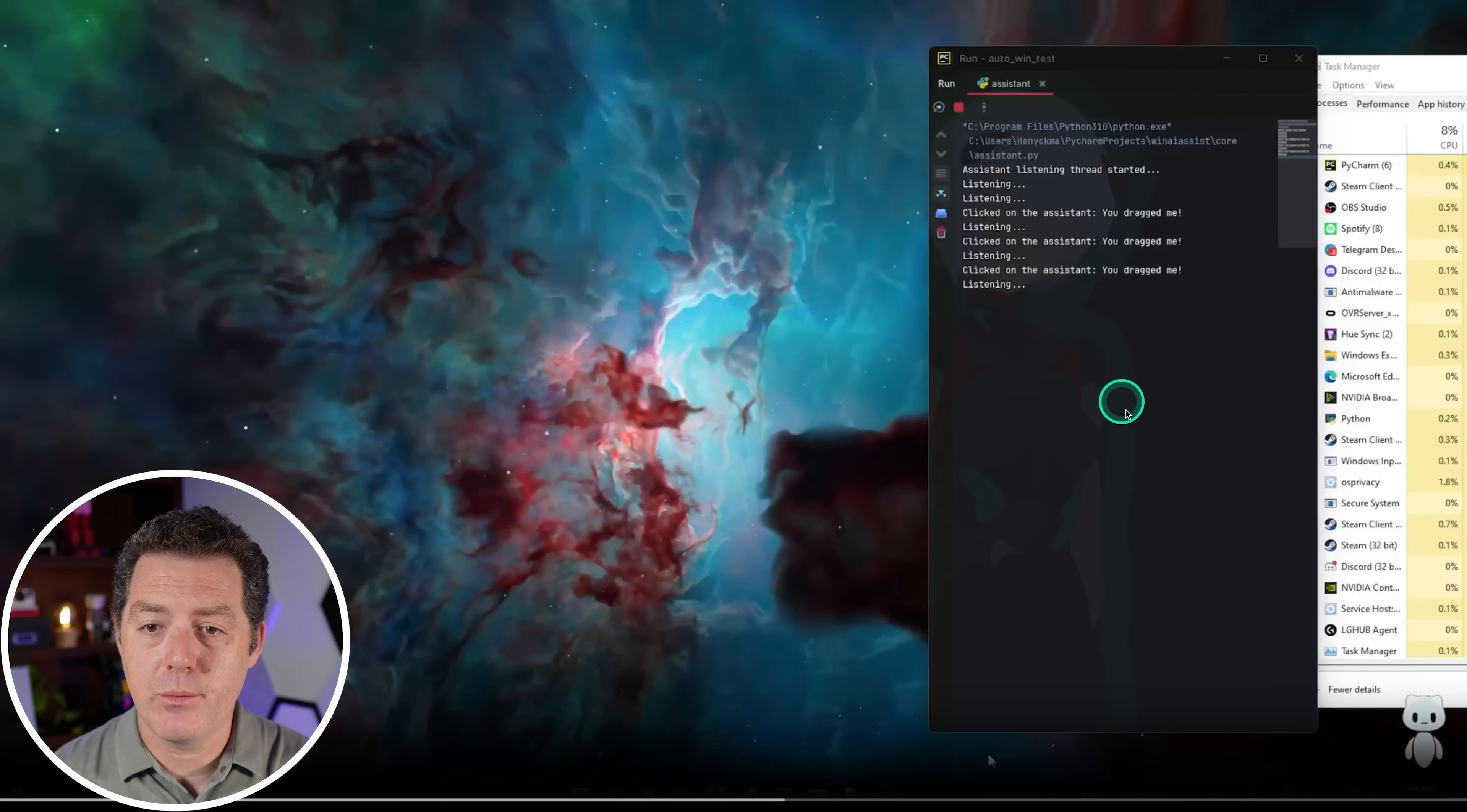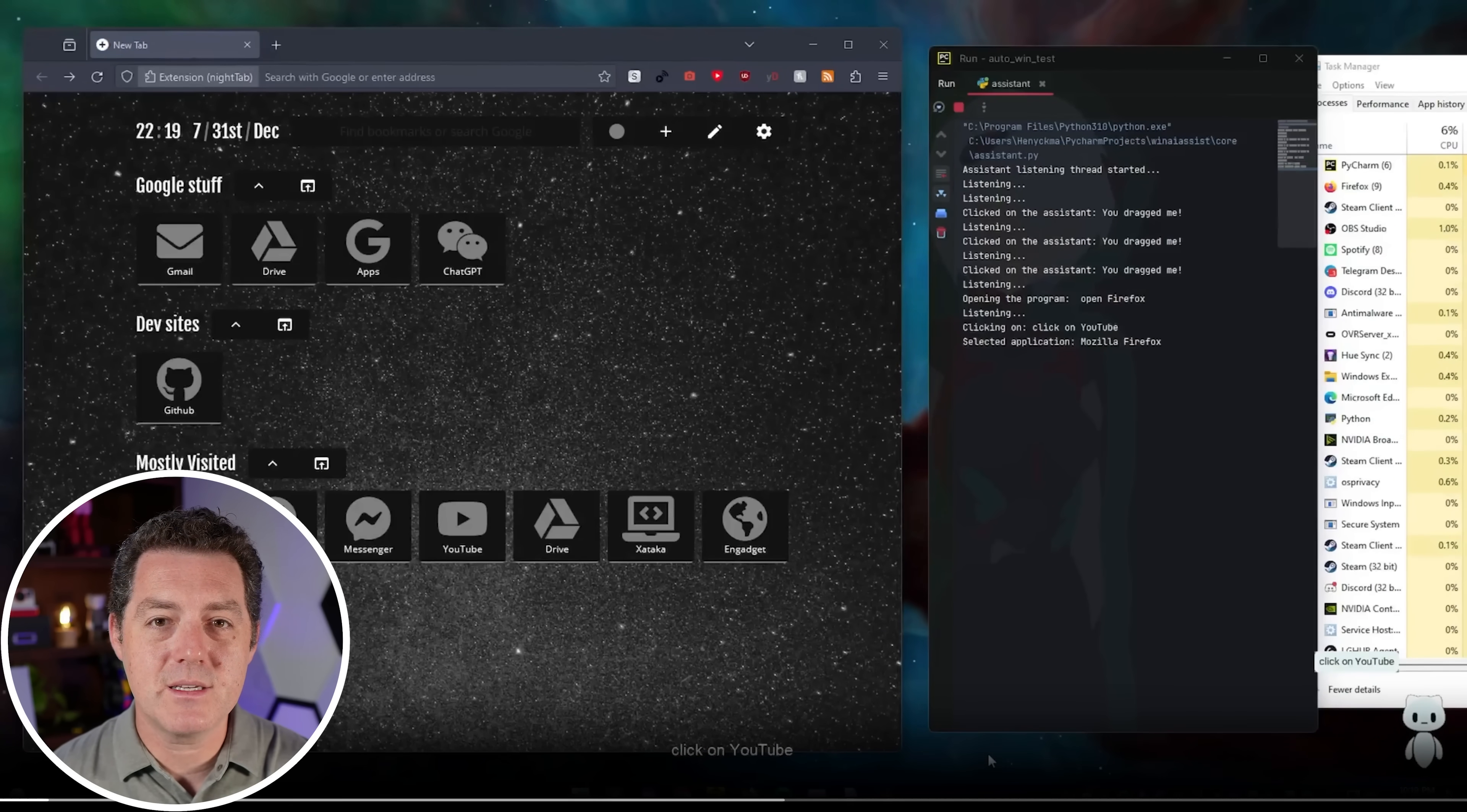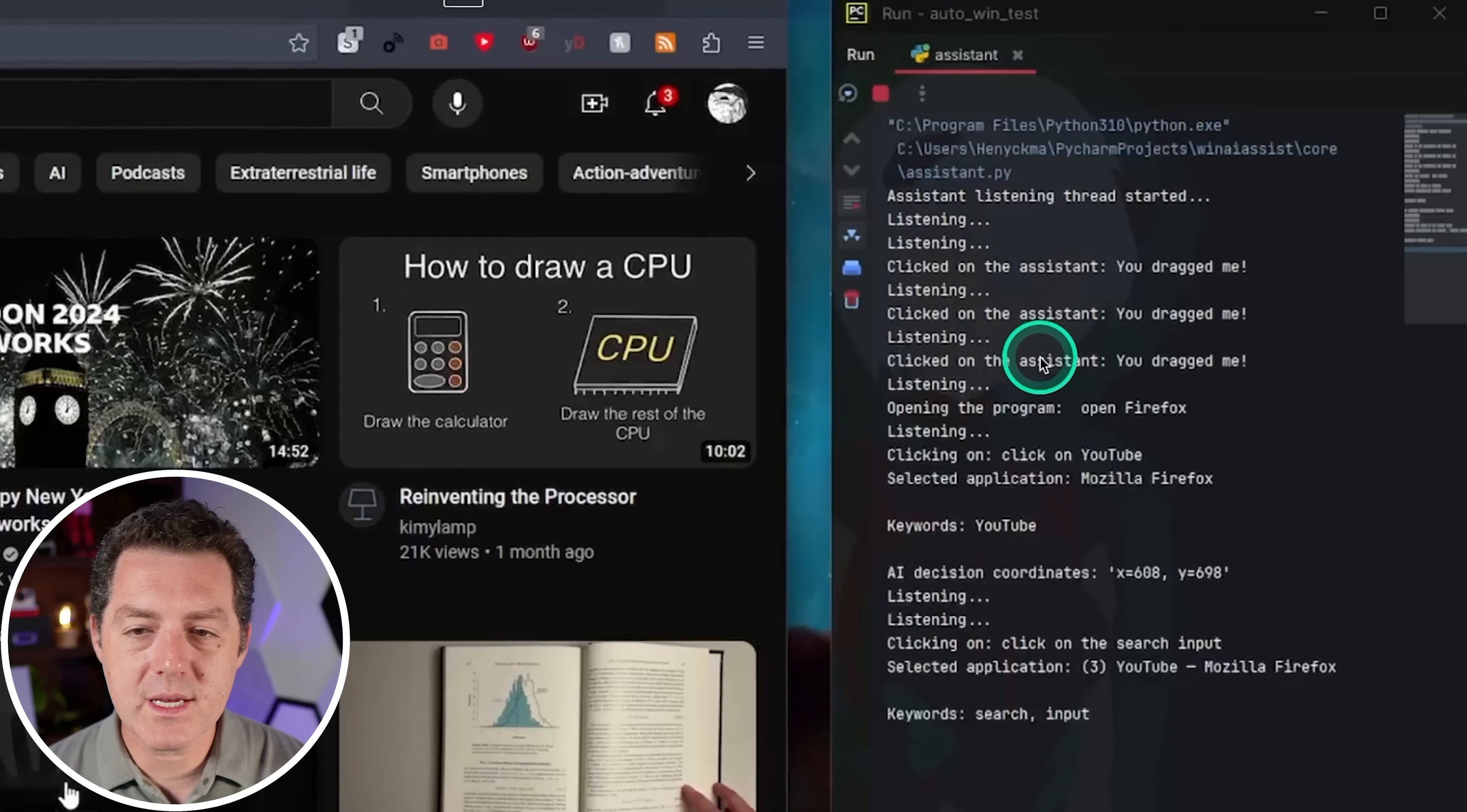So let's look at a few examples. All right, so what we're going to be seeing is an example in the Windows environment. We have this little assistant right there, and you can tell it to do different things. So the first thing we're going to tell it, or the first thing that the video tells it, is to open Firefox. Open Firefox. Click on YouTube. Click on YouTube. So it's giving it a series of things to do. Clicking onto the element without visioning context. Okay, so it clicked on YouTube. Okay, so let's take a look at actually what's happening. So you clicked on the assistant, you dragged me. So that's just the person dragging the little assistant around. Then we say open Firefox. So it responds with clicking on, click on YouTube, selected application, Mozilla Firefox. Then AI decision coordinates. It actually finds the coordinates. Then it says clicking on the search input and so on. So let's keep watching.